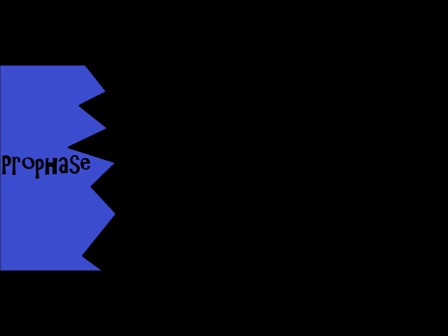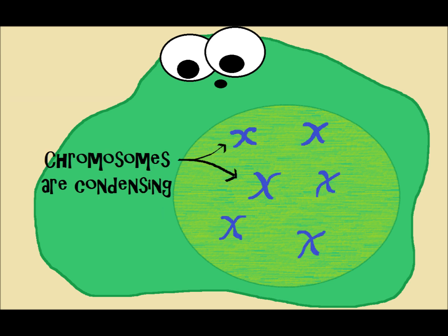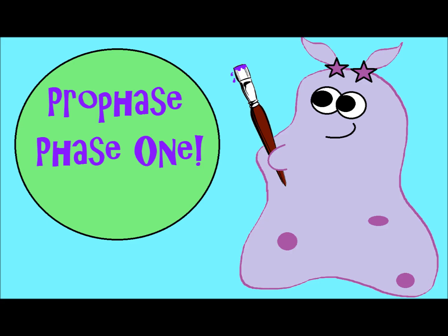The very first step is prophase. Because it's the beginning step, the nucleus is still there and it's going to go away in a little bit. So this is the stage where it's actually still there, and the chromosomes are visible — in fact, we say they're condensing, which means they're thickening and becoming visible. So prophase is the very beginning step.